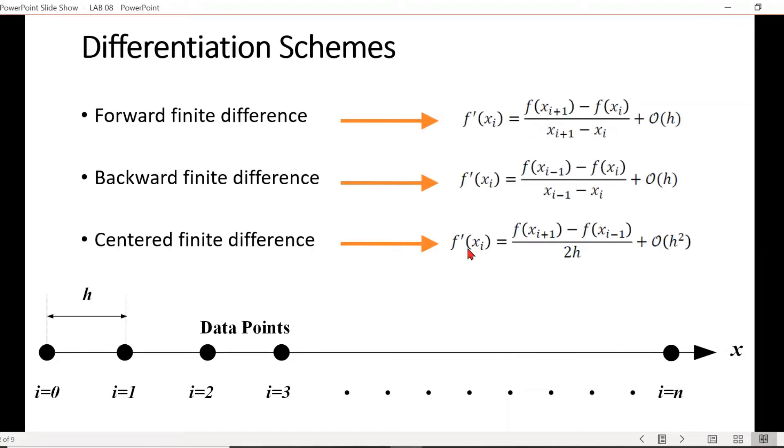There are three numerical differentiation methods: forward finite difference, backward finite difference, and centered finite difference. As you can see from the picture, there are n number of data points on the line along x direction. It starts from i equals to zero where the data points are all equally distant, which is represented by h.